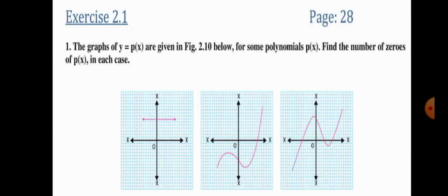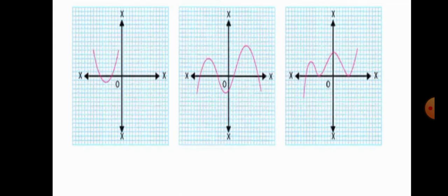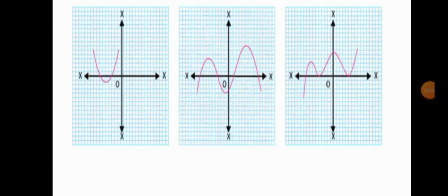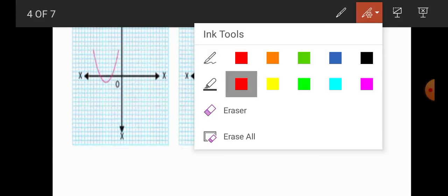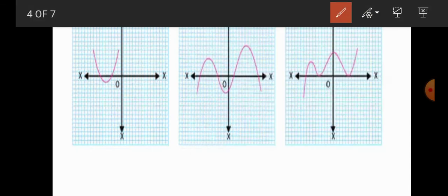Now moving to the fourth graph — you can see the number of intersections on the x-axis is 2, so the number of zeros equals 2.